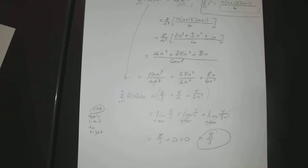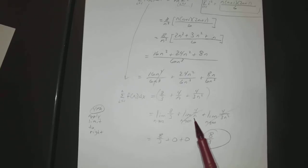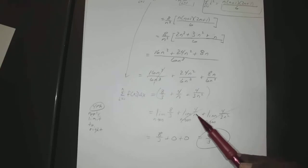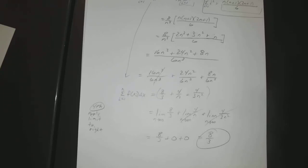Those terms are zero because as n approaches infinity, n is in the denominator, so you're dividing 4 by an ever-larger number, which goes to zero. This method is pretty similar to the limit definition — there's a shortcut out there, but you have to go through this process first.